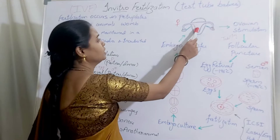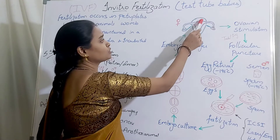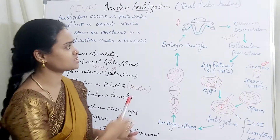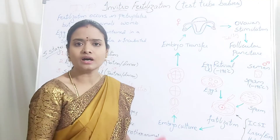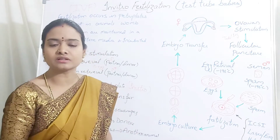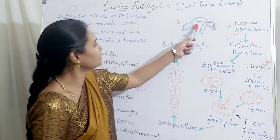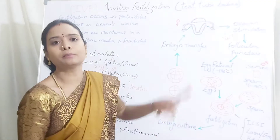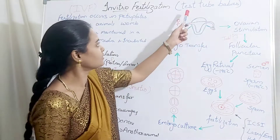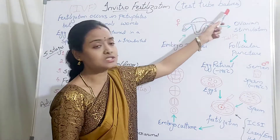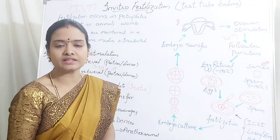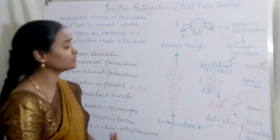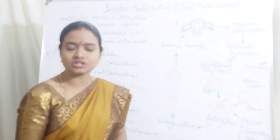The embryo is introduced into the uterus of the female, then you wait for the gestation period. After completing the gestation period the female animal delivers a baby, which is referred to as a test tube baby. This is the in vitro fertilization technique.